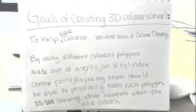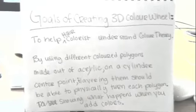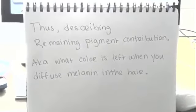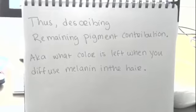To help hair colorists understand colors here, we add different color polygons and put them around a center point so that you can rotate them. And it also describes remaining pigment contribution, what color is left when you diffuse the melanin in the hair.